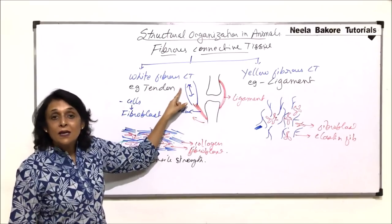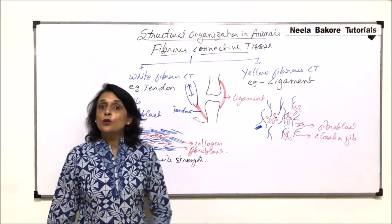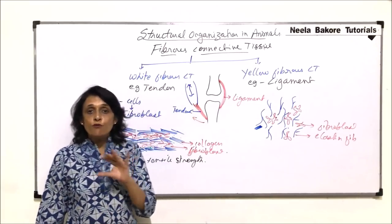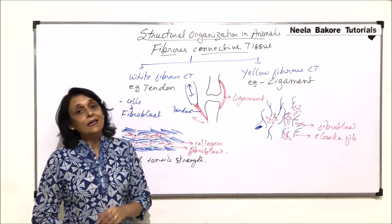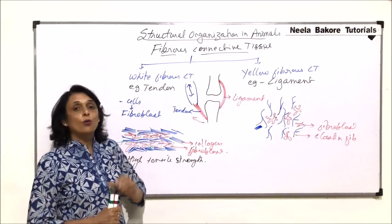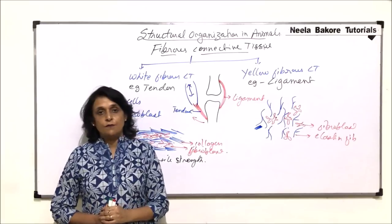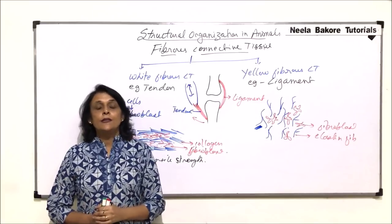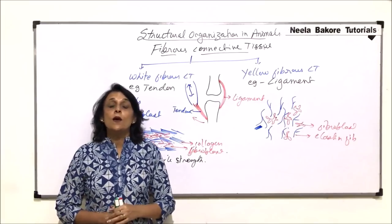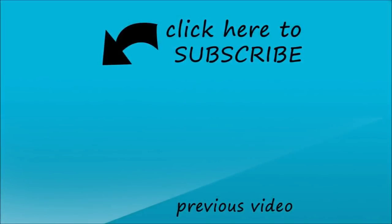Ligament joins bone to bone and tendon helps the muscle join to the bone so that movement of the joint can take place. These two come under fibrous connective tissue. In the next part we will start with the structure of bone.